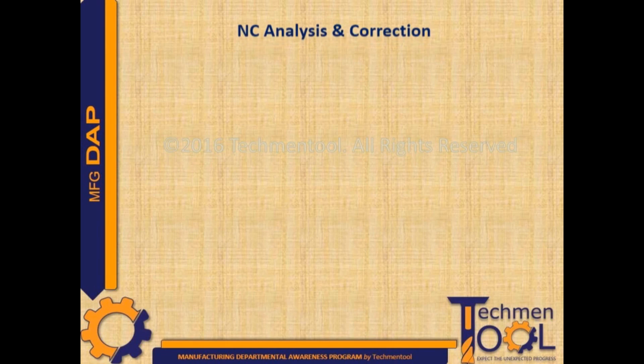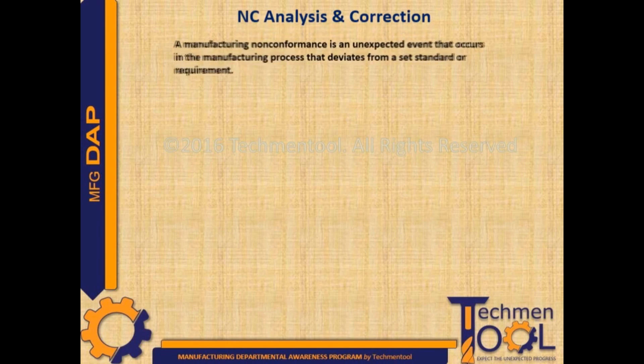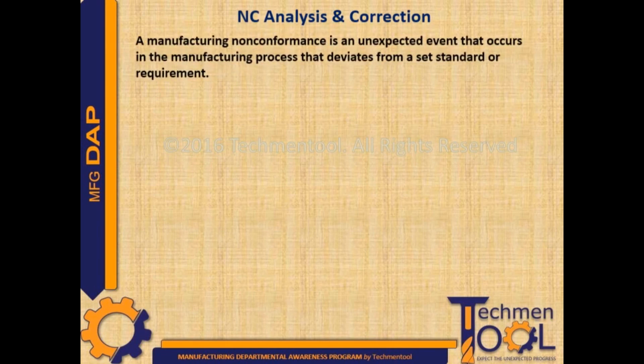NC Analysis and Correction. A manufacturing nonconformance is an unexpected event that occurs in the manufacturing process that deviates from a set standard or requirement.